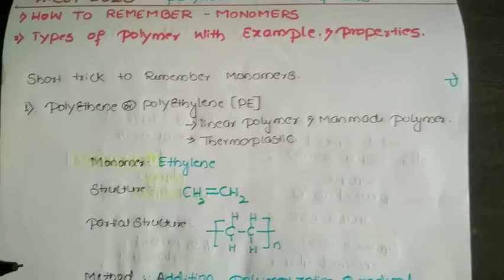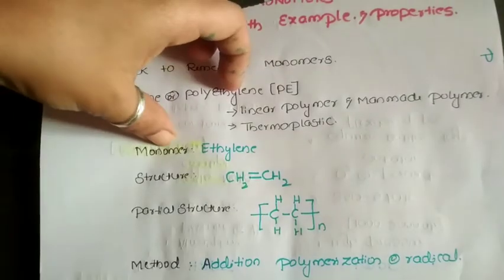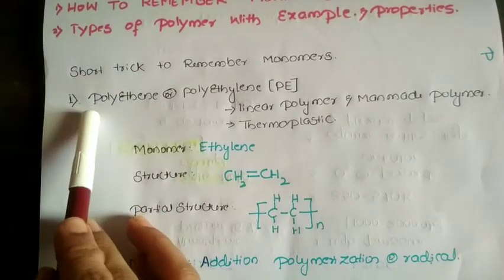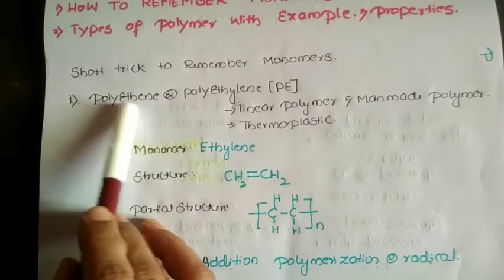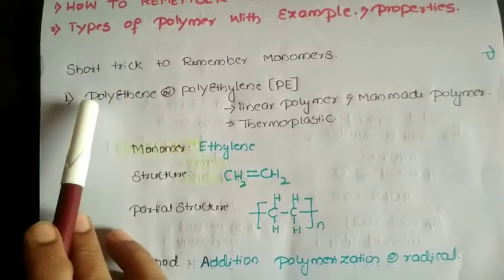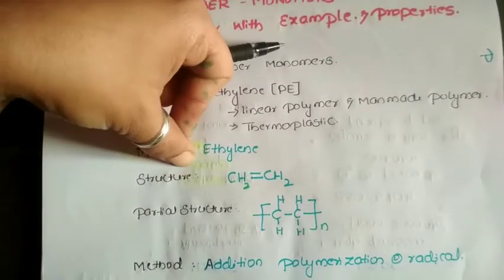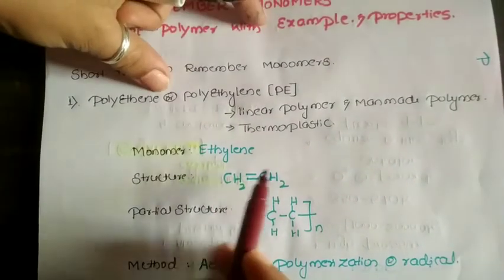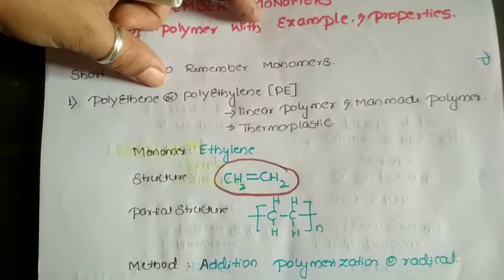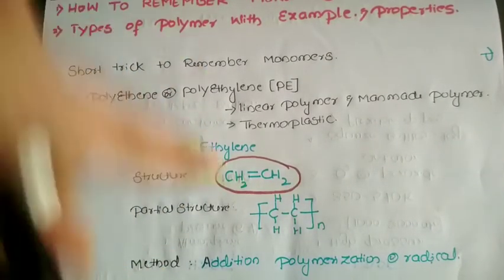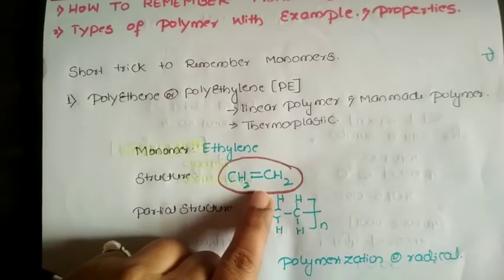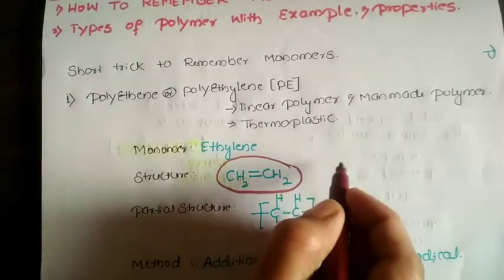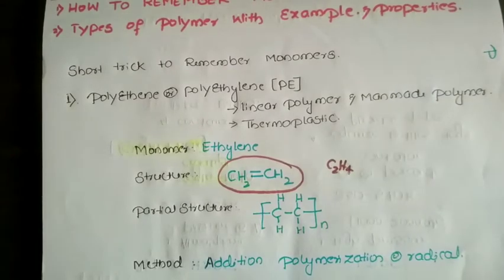The monomer of polyethylene is ethylene. Here is a short trick to remember: whenever the word 'poly' comes, the word in front of 'poly' will be the monomer unit. So for polyethylene, the monomer is ethylene. The structure of ethylene is CH₂=CH₂, which is C₂H₄. Remember this structure well, because it is the basic structure used for almost all homopolymers.